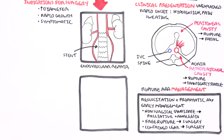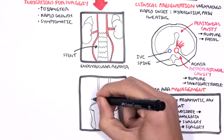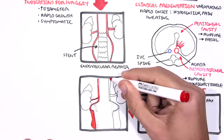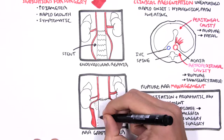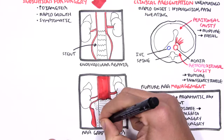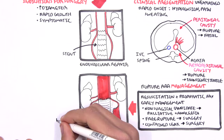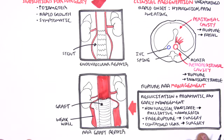An example of surgery in the case of a ruptured AAA is AAA graft repair, where the weak walls of the aorta are replaced with a graft. If surgery is not performed, the prognosis of a patient with a ruptured AAA is very poor.